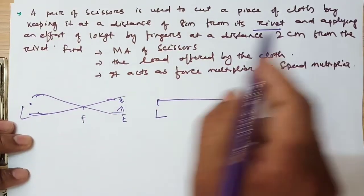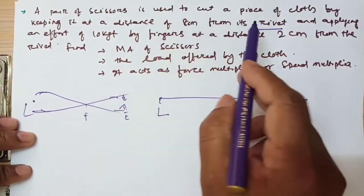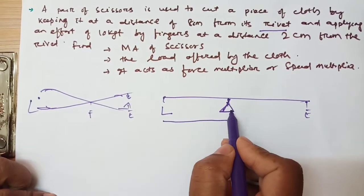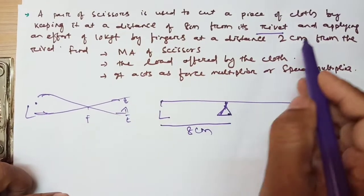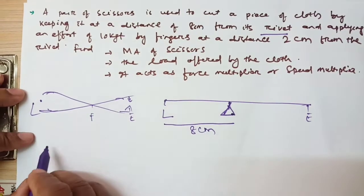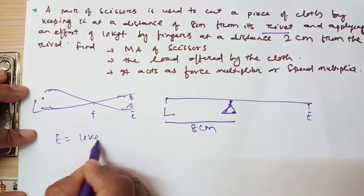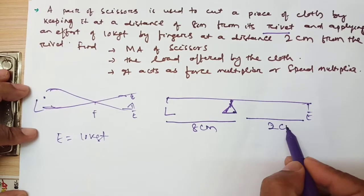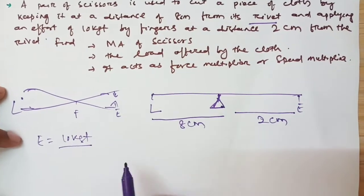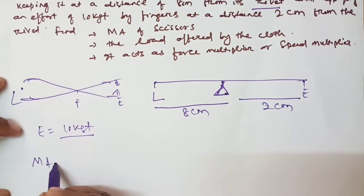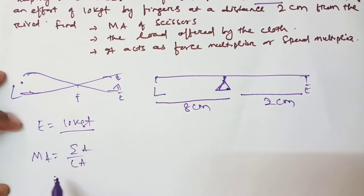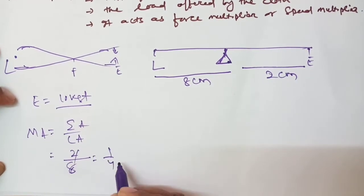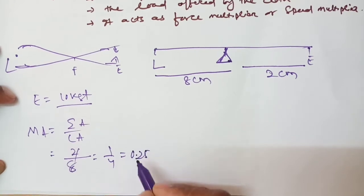Given: load arm (distance from load to fulcrum) = 8 cm; effort = 10 kgf; effort arm = 2 cm from the rivet. MA = effort arm by load arm = 2 by 8 = 1 by 4 = 0.25. So mechanical advantage is 0.25.